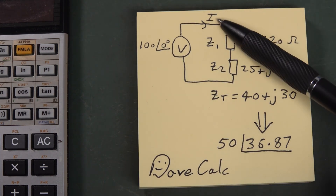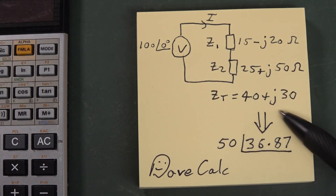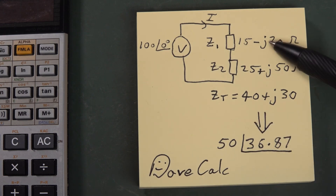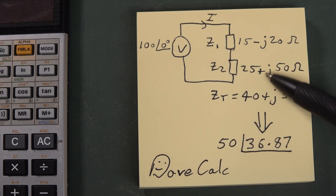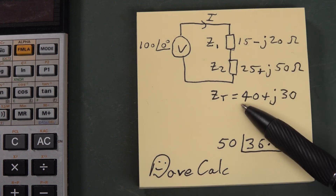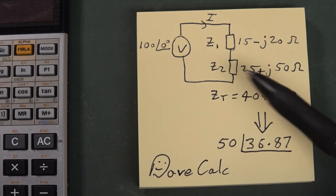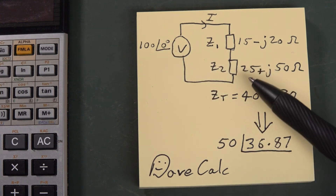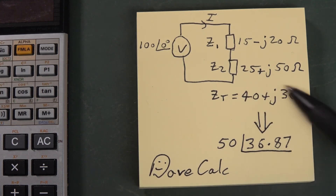To calculate our current, we need to divide our voltage by our total impedance. Our total impedance is in rectangular form because when you add or subtract complex numbers, it's easier to have them in rectangular form like this — you just add up the real component and add up the imaginary component. But if we want to divide the voltage by our total impedance to find our current, we need our impedance not in rectangular form but in polar form like this.